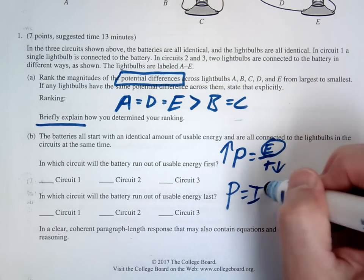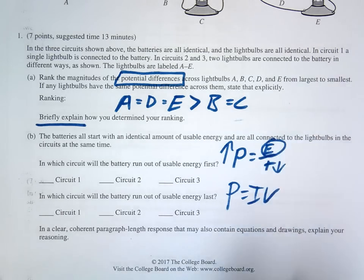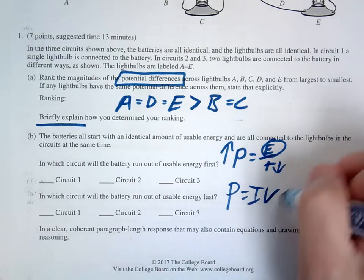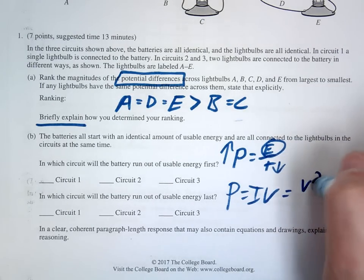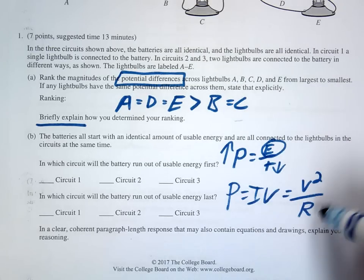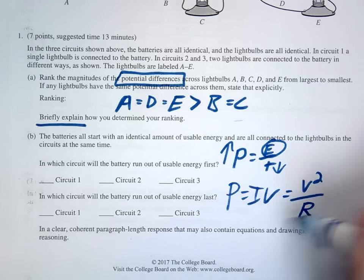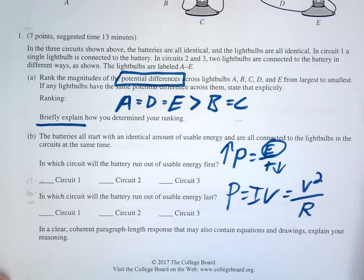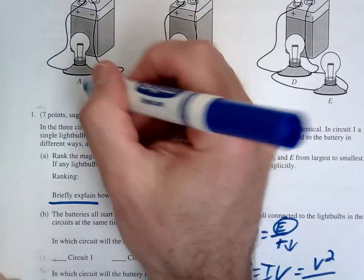To look at power you could look at either which one has the most current or you could look at which one has the least amount of resistance. Because the one with the least amount of resistance is going to have the most amount of current, right, and therefore the most amount of power. So you just kind of look at the circuits and you could do some circuit analysis here.